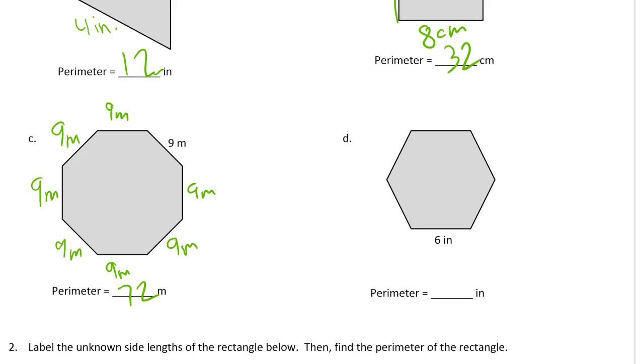And here we have a regular hexagon with six inch sides. And six sixes is 36.